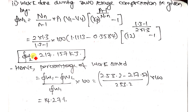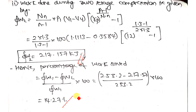The work saved is calculated as: percentage saving = (W1 − W2) / W1 × 100. The change divided by the original always gives the percentage change. Substituting W1 = 253.2 kJ and W2 = 217.157 kJ gives approximately 14% saving. So making the compressor work in two stages reduces work by about 14%.